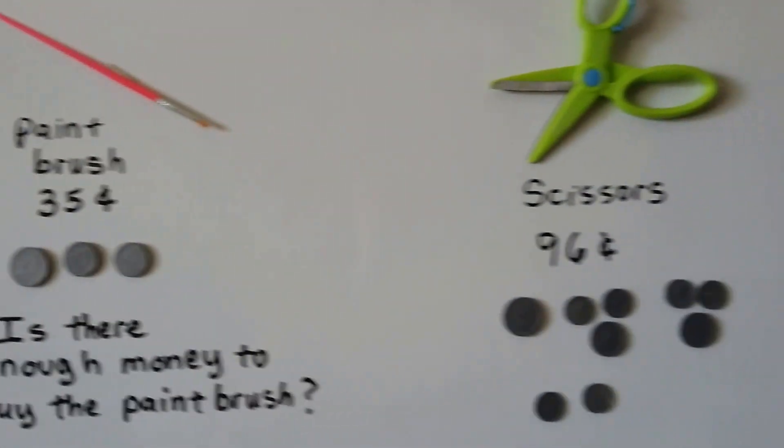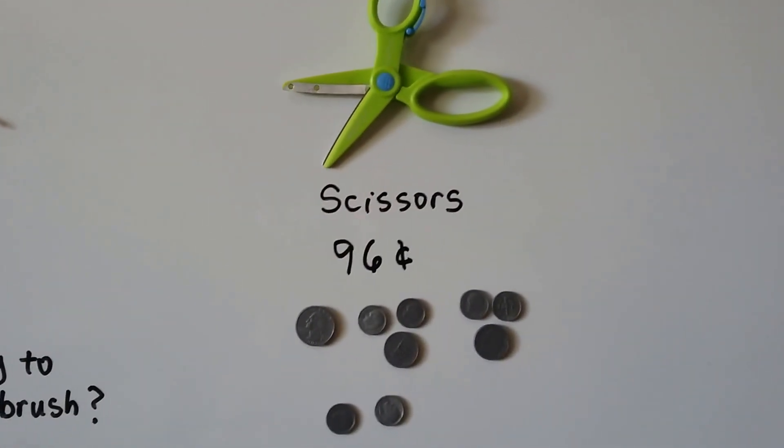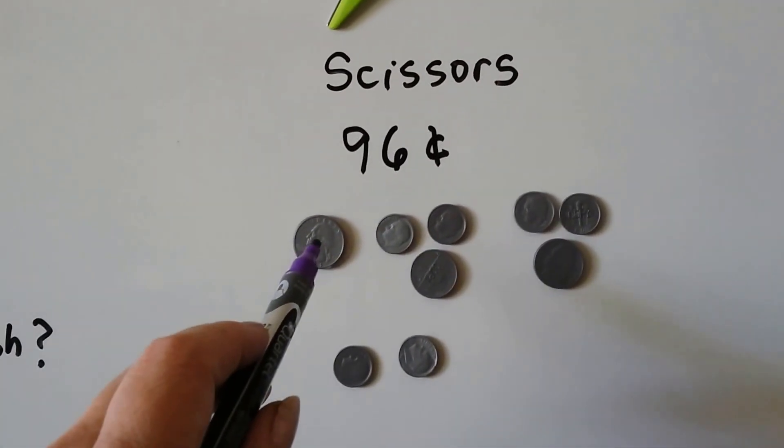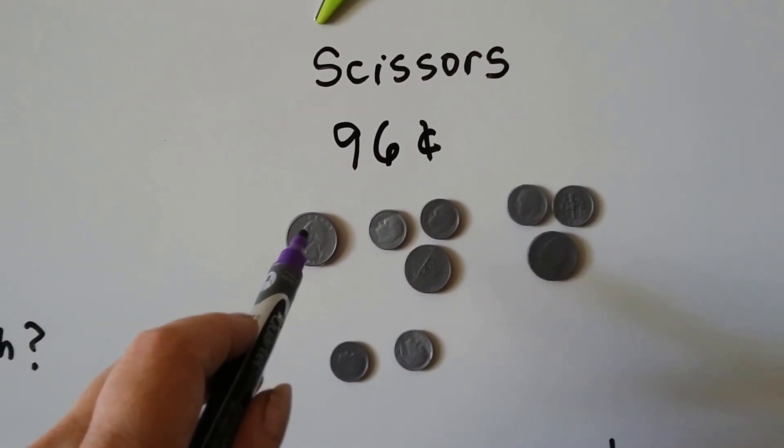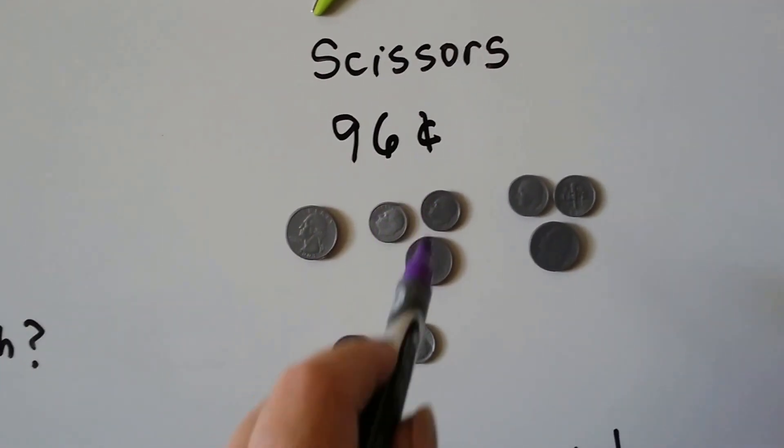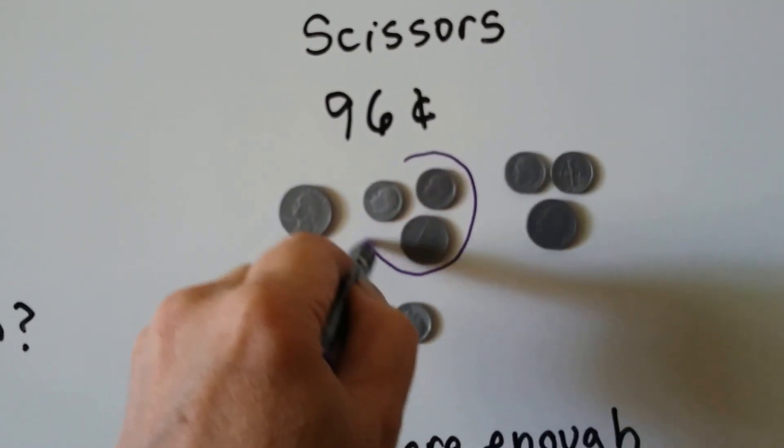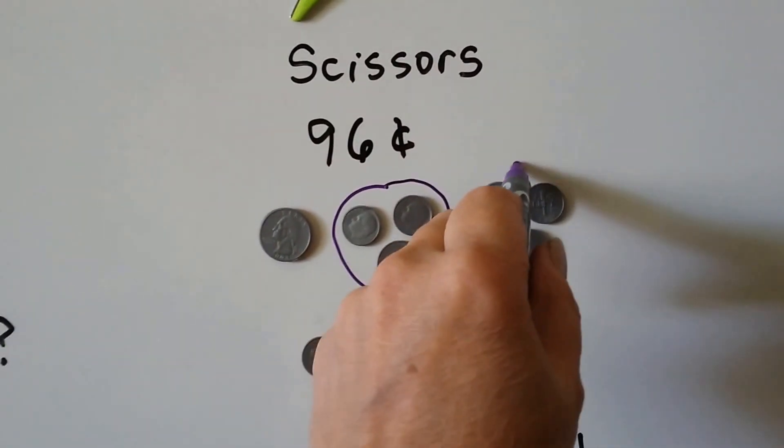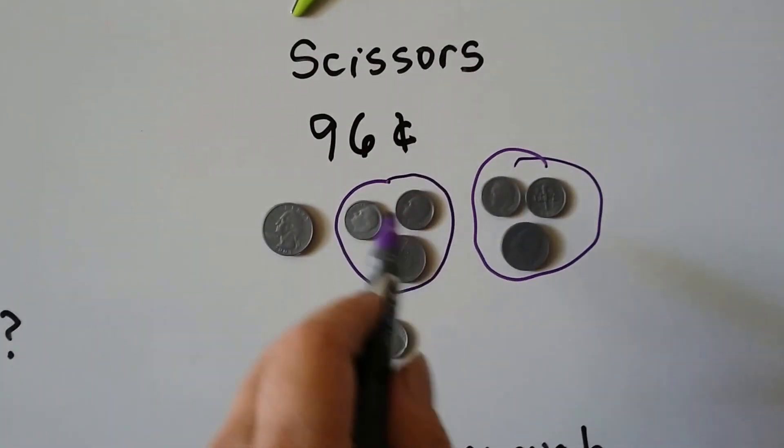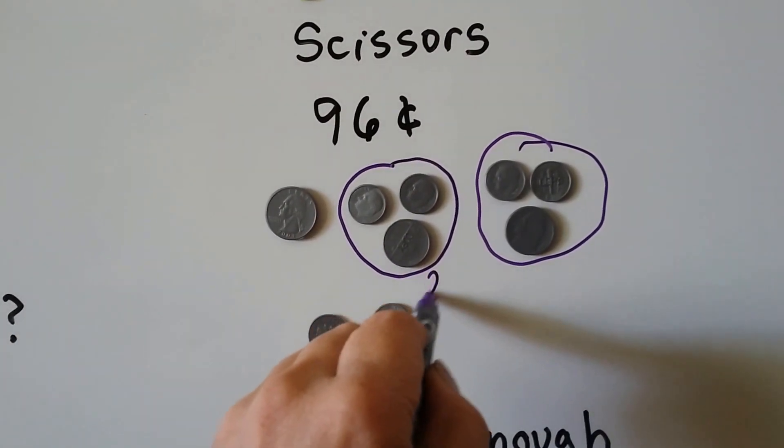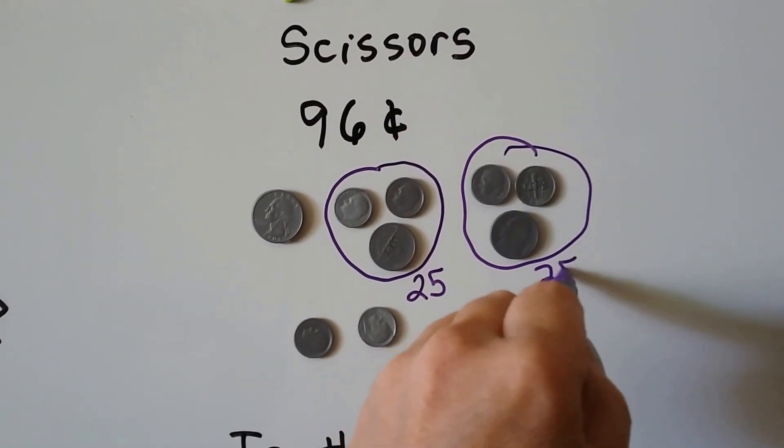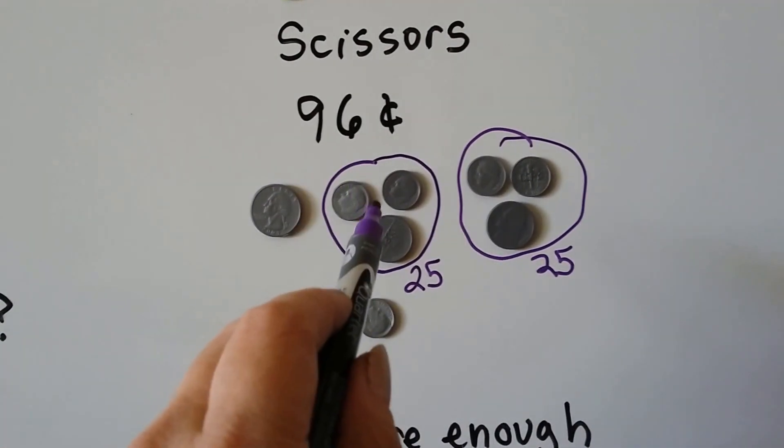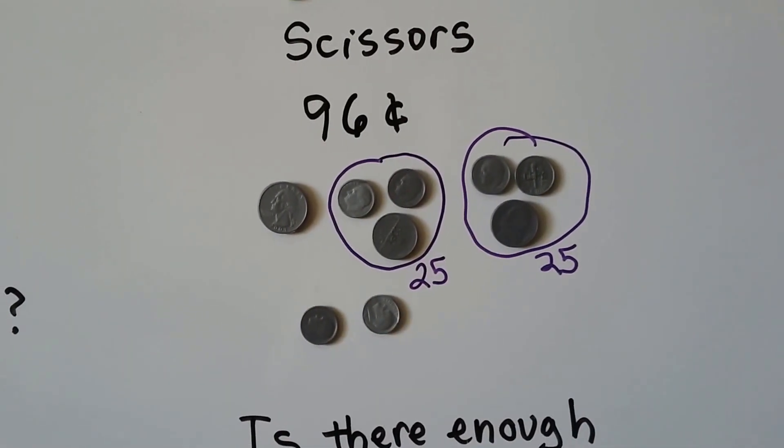How about these scissors? These scissors cost 96 cents. Is there enough money here to buy the scissors? Well, we have a 25 here. That's a quarter, right? And look, we have a 10, a 10, and a 5. This 10, 10, and 5 makes a quarter. That makes 25. And we have another 10, 10, and 5. We have another two dimes and a nickel. Two dimes and one nickel makes 25. So now we have a quarter, which is 25, and another 25, and another 25. So we can count by 25s, can't we?